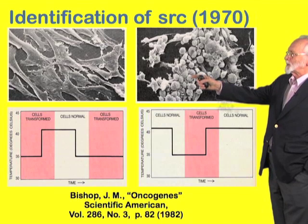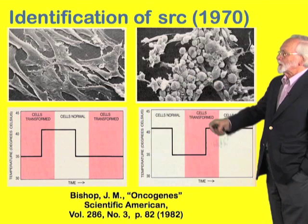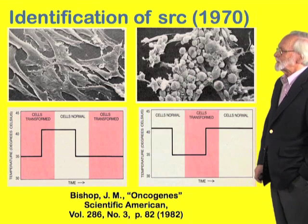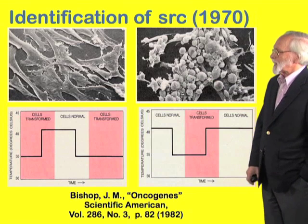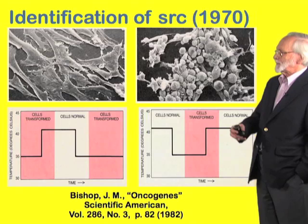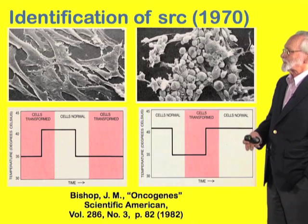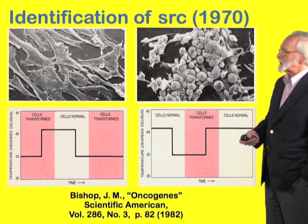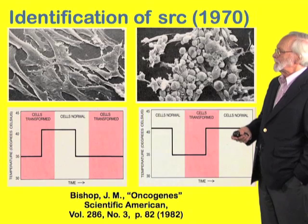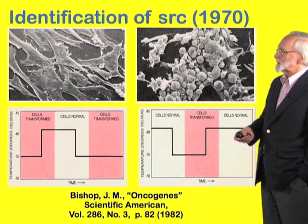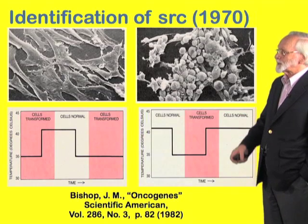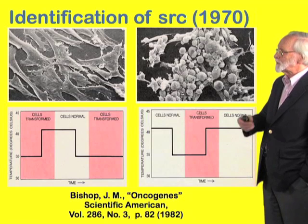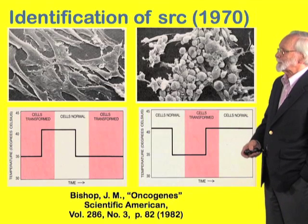What Martin discovered was that if he infected the cells at 35 degrees with this mutant, the cells transformed. But as soon as the cells were shifted to a higher temperature, they reverted to the normal state.